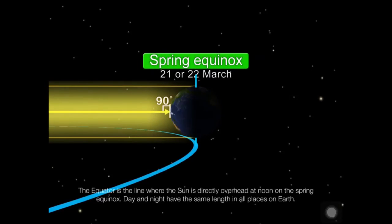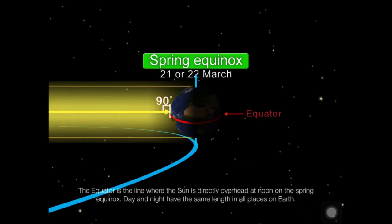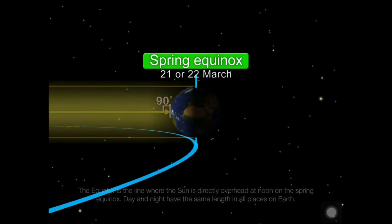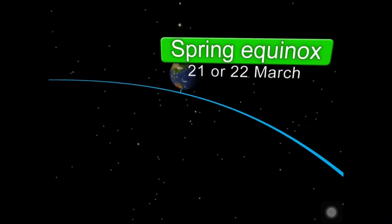The equator is the line where the Sun is directly overhead at noon on the spring equinox. Day and night have the same length at all places on the Earth.